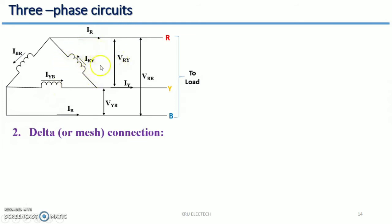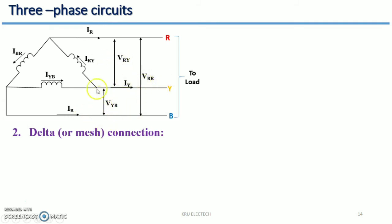The same applies for the delta connection. In delta connection the phase voltage and the line voltage are both the same. In star connection the phase current and line current are the same, whereas in delta connection the phase voltage and the line voltage are the same. Here the currents IRY, EBR, and EYB correspond to line voltages VRY, VYB, and VBR. So the phase voltage and the line voltage are the same, but the phase current and line current are different.